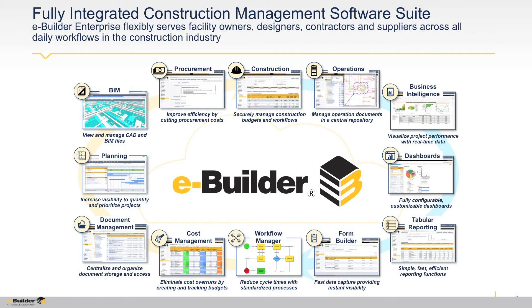You'll also see our cost manager. Our cost management system is an award-winning solution that eliminates cost overruns by creating and tracking budgets and real-time actuals against those budgets. You'll also see capabilities in document management, where all information on capital projects from the very beginning of capital planning all the way through operations is centralized in one location — all core business process management capabilities applied to planning, design, procurement, construction, and operations.